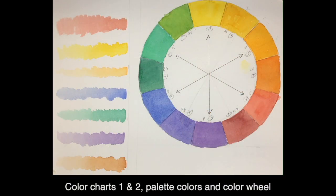In the first two charts of this module, you'll lay out all of your colors individually from light to dark and then make a color wheel so you can see each color's relationship to another.